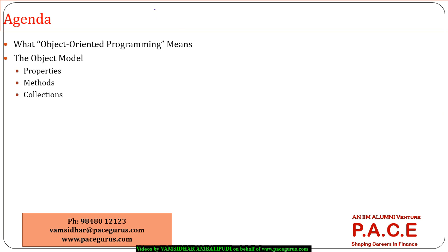What object-oriented programming means, how I link this concept to the VBA world, and what are the different important keywords when we talk about object-oriented programming — what are the properties of objects, what are the methods of objects, and what are the different collections. These three key terms I am going to introduce, and the whole example will be driven with respect to Excel VBA.